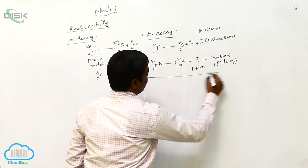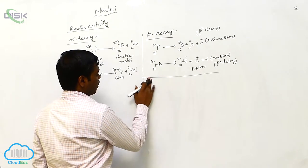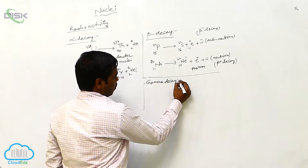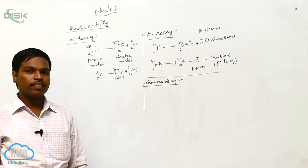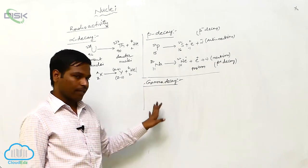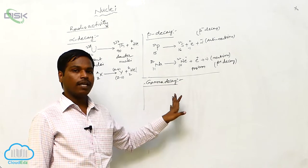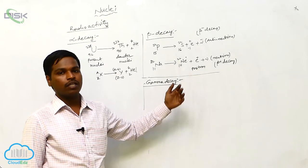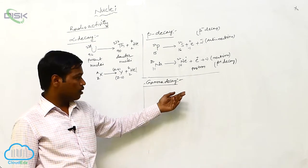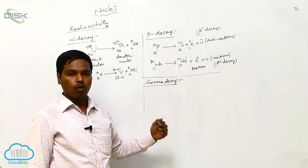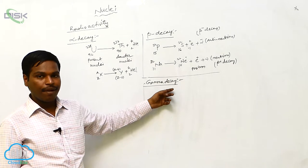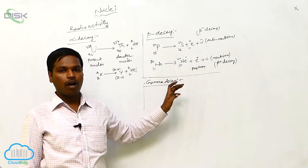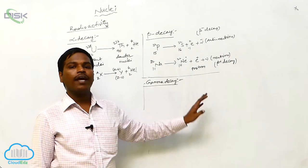Now coming to gamma decay. In the gamma decay, photons of energy are released. When the nuclei is in the excited state and comes to the ground state or lower energy levels, it emits photons called gamma radiations, which also carry energy.